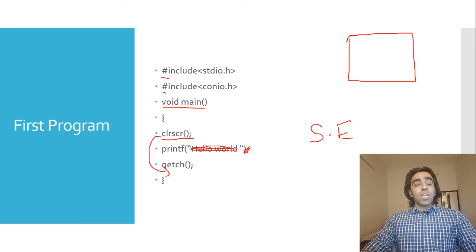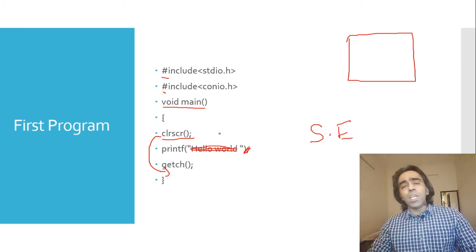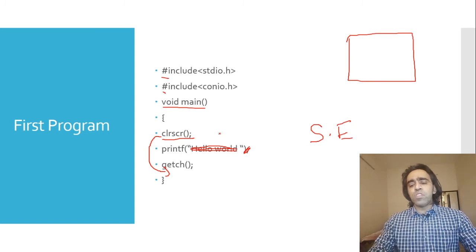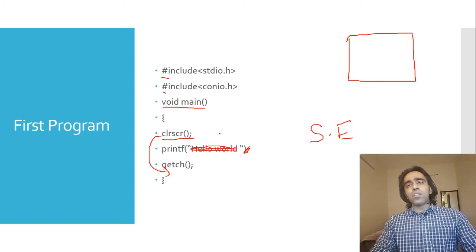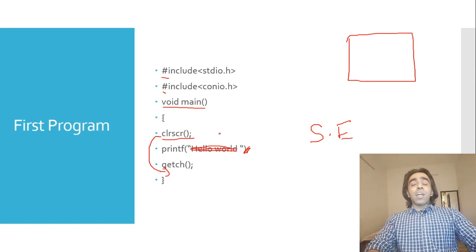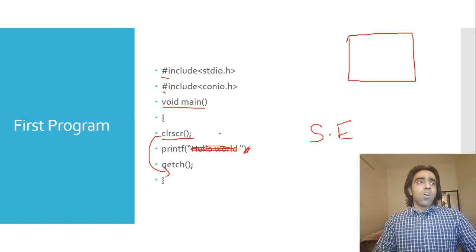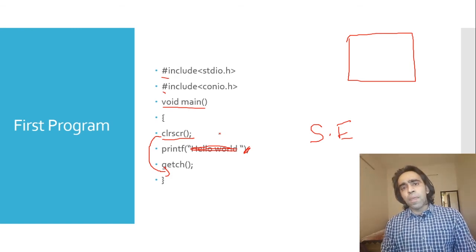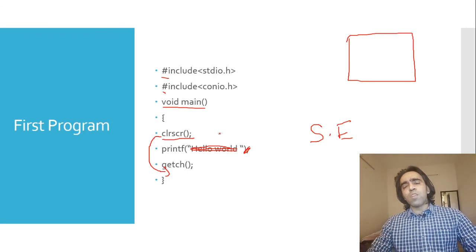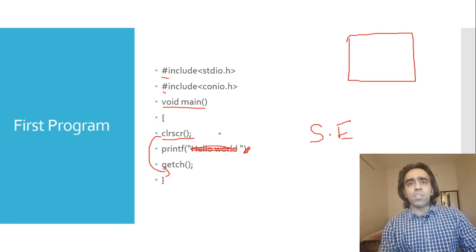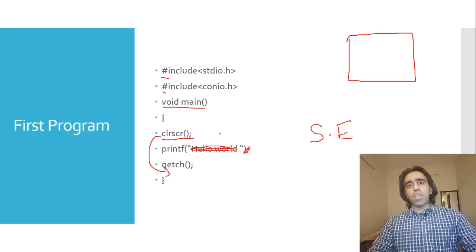For runtime error: if we are dividing two numbers and one number is zero, it will become an error because we cannot divide any number by zero. So this was our topic — we have learned about program debugging and the kinds of errors. With this, Chapter One is complete. Next lecture will be Chapter Two. Thank you, class — that's enough for today.